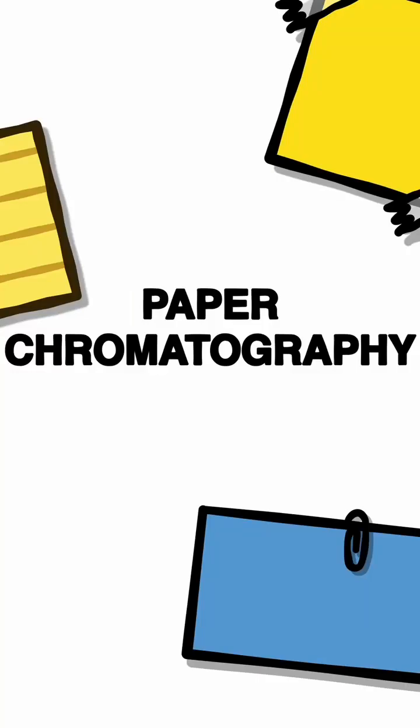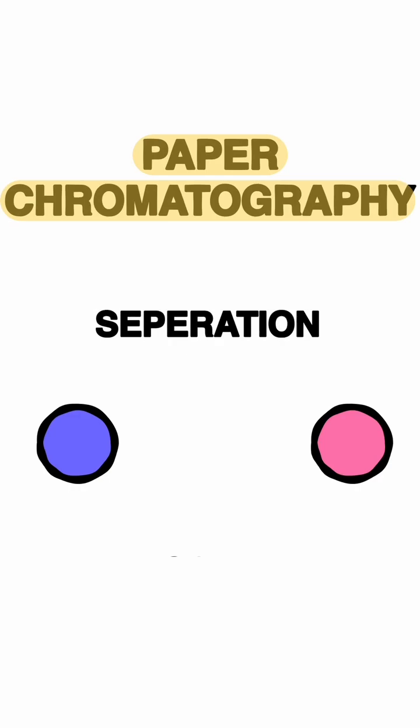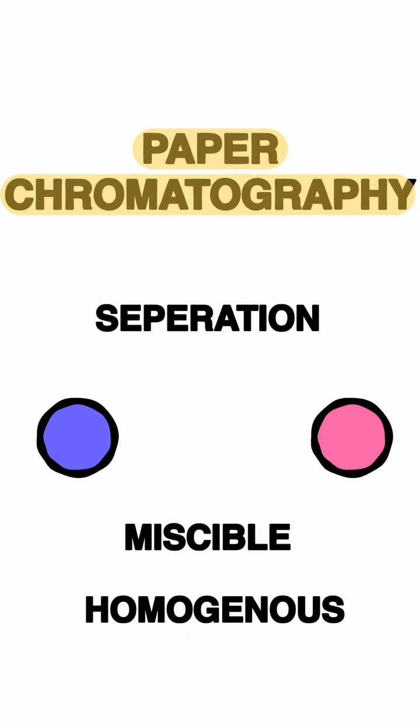The next technique we're going to discuss is called paper chromatography. This can be used to separate miscible substances or homogeneous substances based on their solubility. Solubility differences are the key point when it comes to paper chromatography.